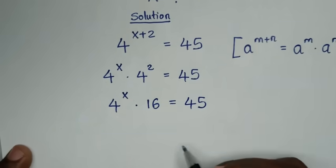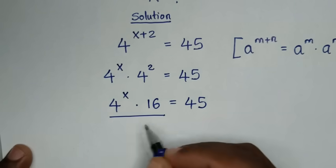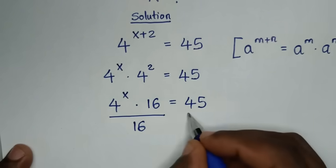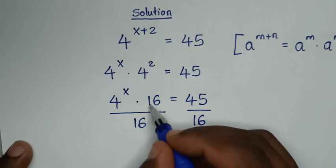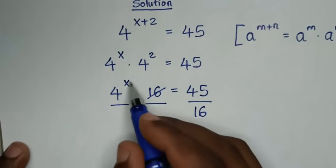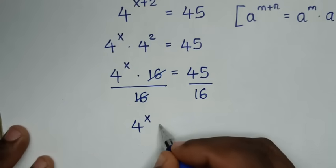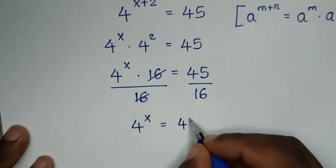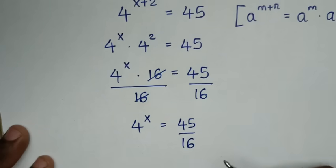Then we will divide by 16 on both sides. The 16s will cancel, and it will be 4 power of x is equal to 45 over 16.